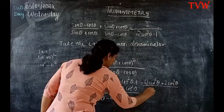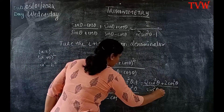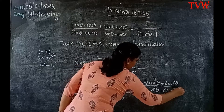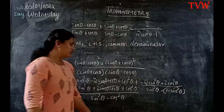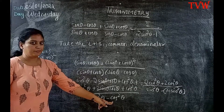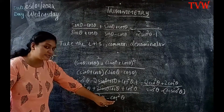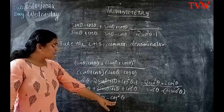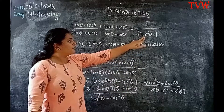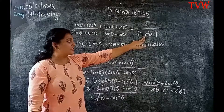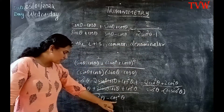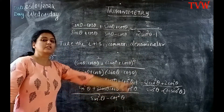So in the denominator we can write sin²θ − (1 − sin²θ). Why am I changing cos into sin? Because on the right hand side of the question we only have a sin term — there is no cos. So I am changing cos to sin.